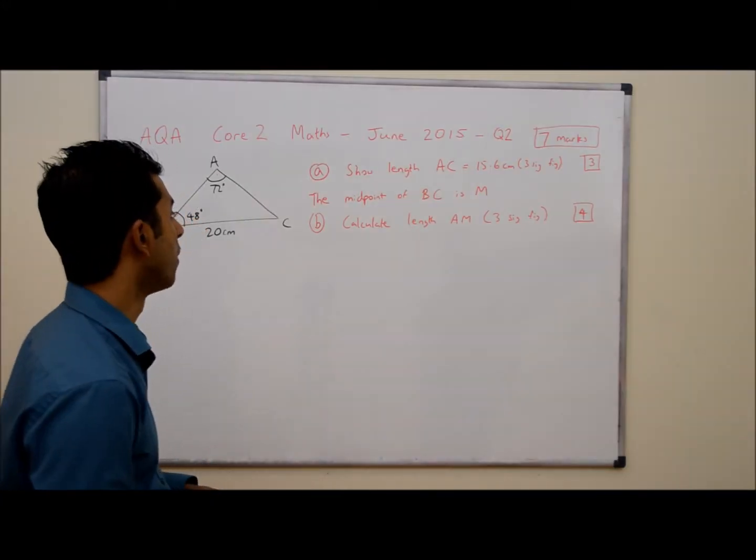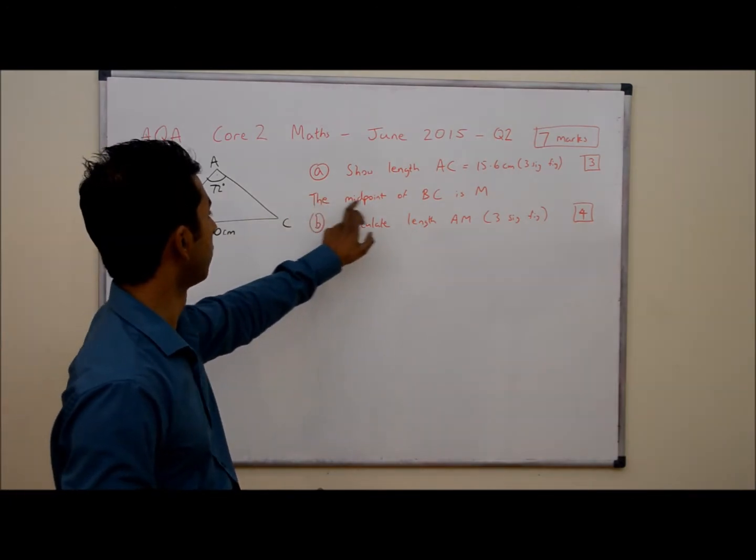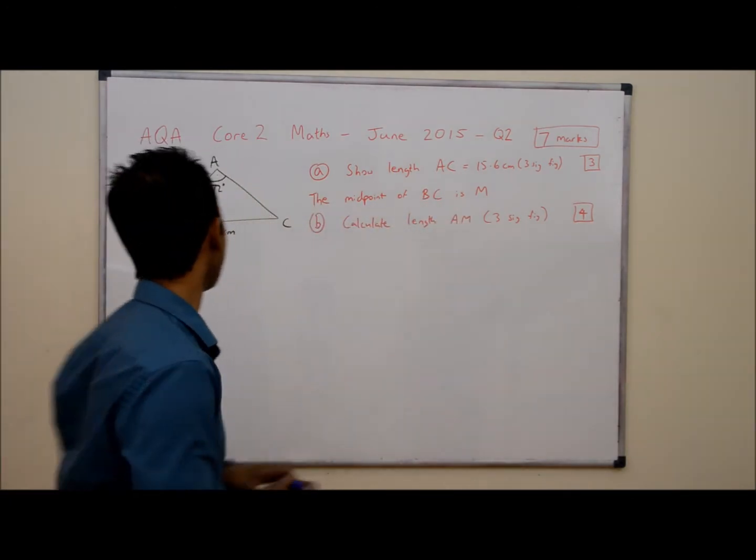So let's have a look at question 2b now. We've got some additional information. It says the midpoint of BC is M.